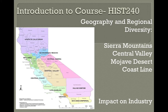California history begins with its geography and regional diversity. As we can see, there are many different regions in California. We will begin our discussion with the four main geographical areas: the Sierra Mountains, the Central Valley, the Mojave Desert, and the coastline areas. California is unique in that the Pacific Ocean on the west, the Mojave Desert to its south, and the Sierra Mountains on its eastern border kept this area relatively isolated for thousands of years.